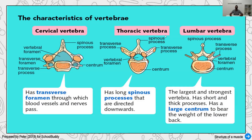Next, we look at the thoracic vertebrae. Thoracic vertebrae have a longer spinous process, because they have to attach and articulate with the ribs. So the spinous process connects the backbone to the ribs. If the spinous process is quite long, that belongs to thoracic vertebrae. For lumbar vertebrae, they have a large centrum — comparably bigger than other vertebrae — because most of our body weight is put on this lumbar region, so a larger centrum provides better support.